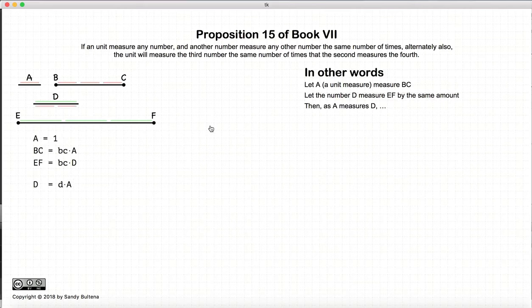Given this condition, then however many times that A measures D, then D will measure EF the same number of times. So let's recap. We have that A measures BC a certain number of times, and D measures EF the same number of times. And if this is true, and A is a unit, then however many times A measures D, BC will also measure EF by the same number of times.